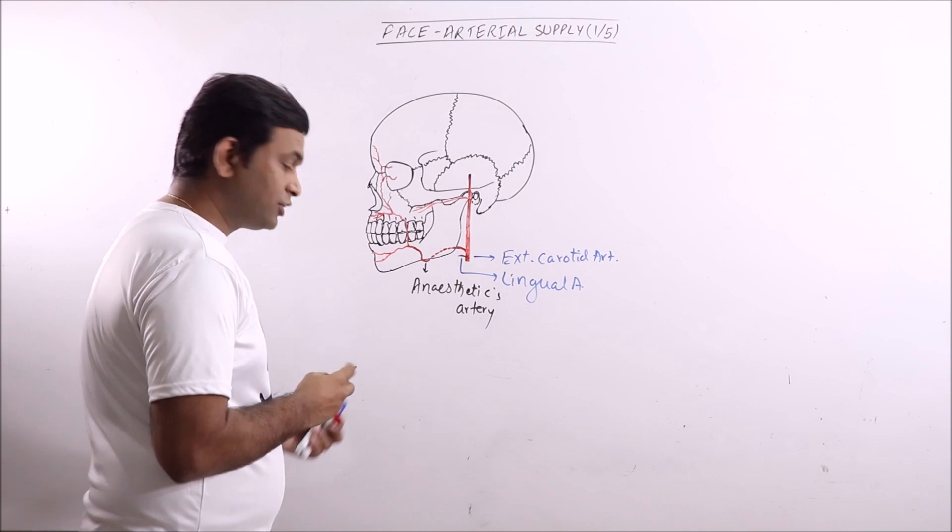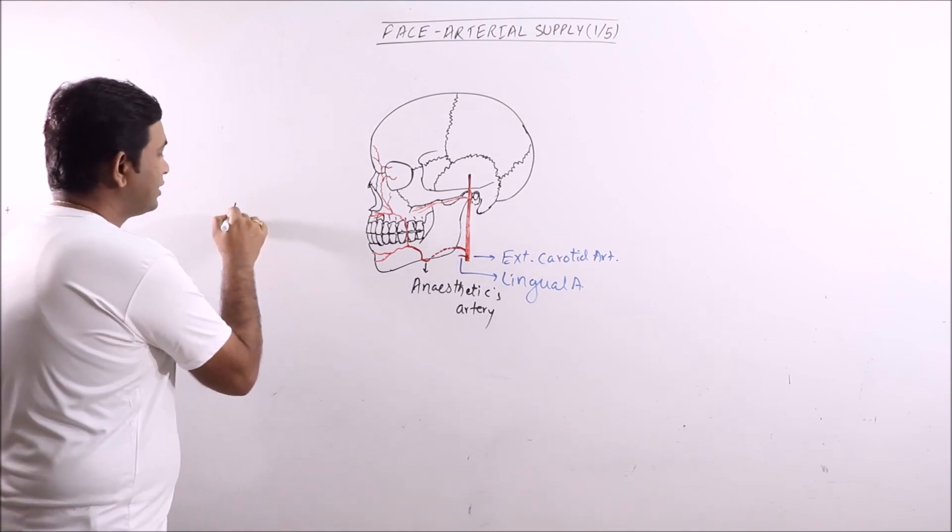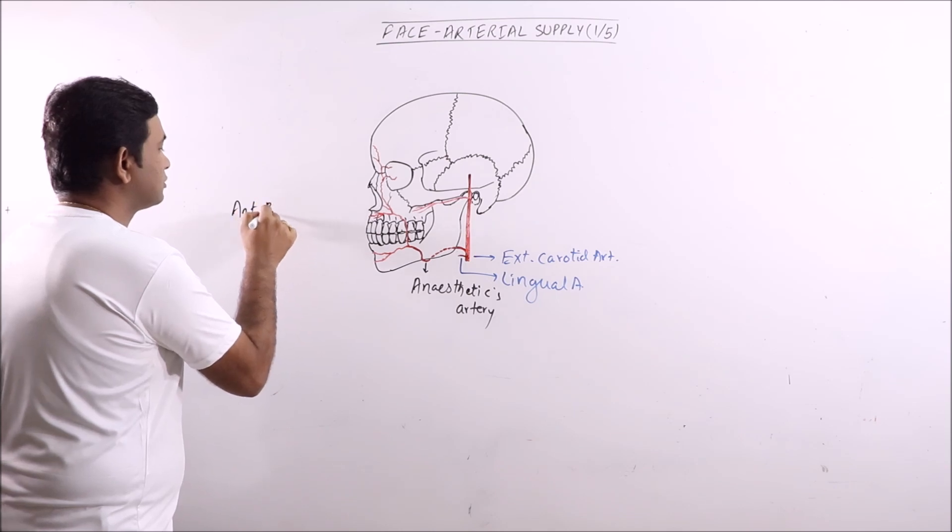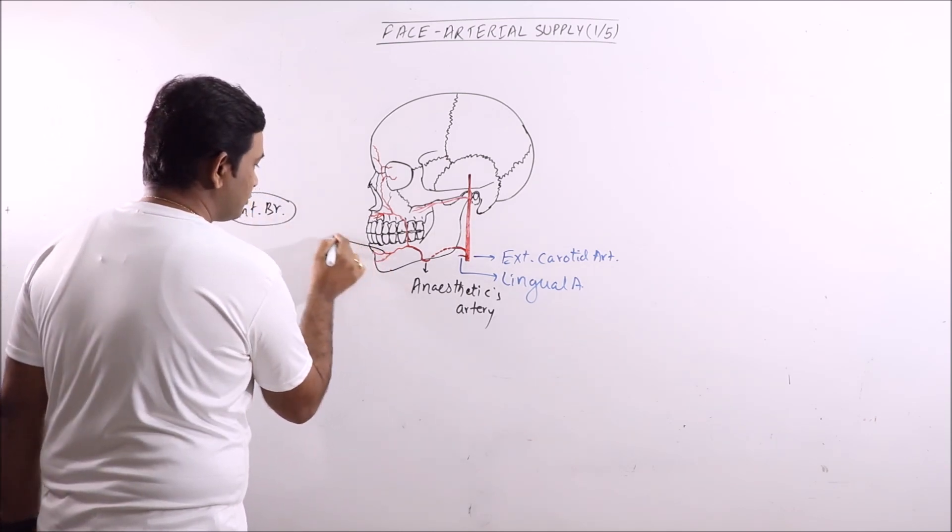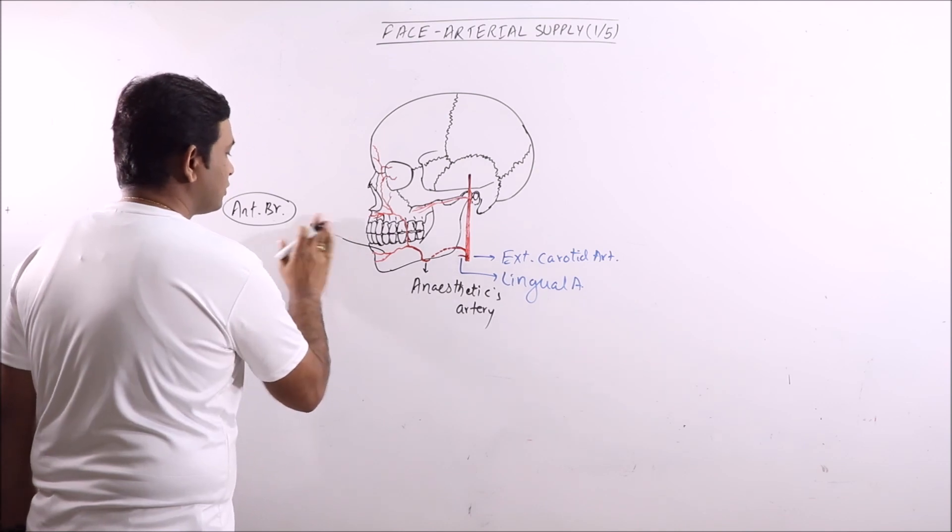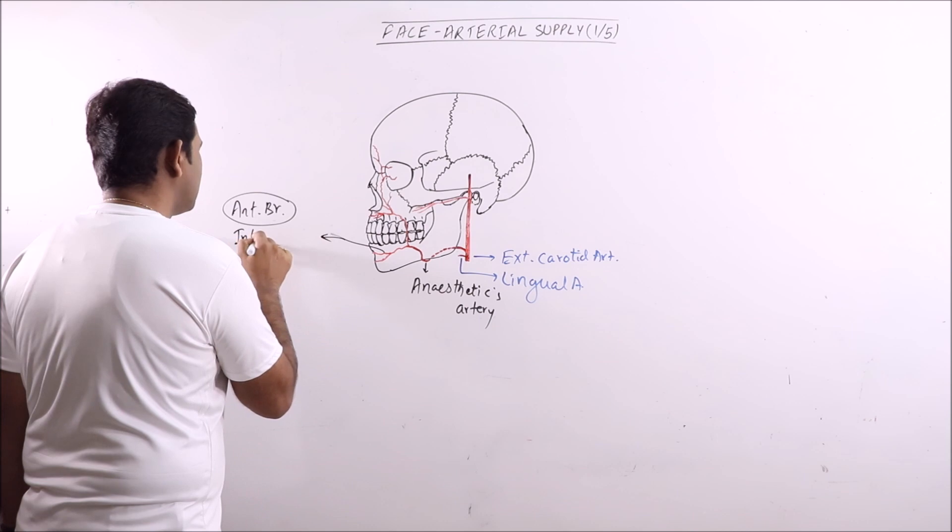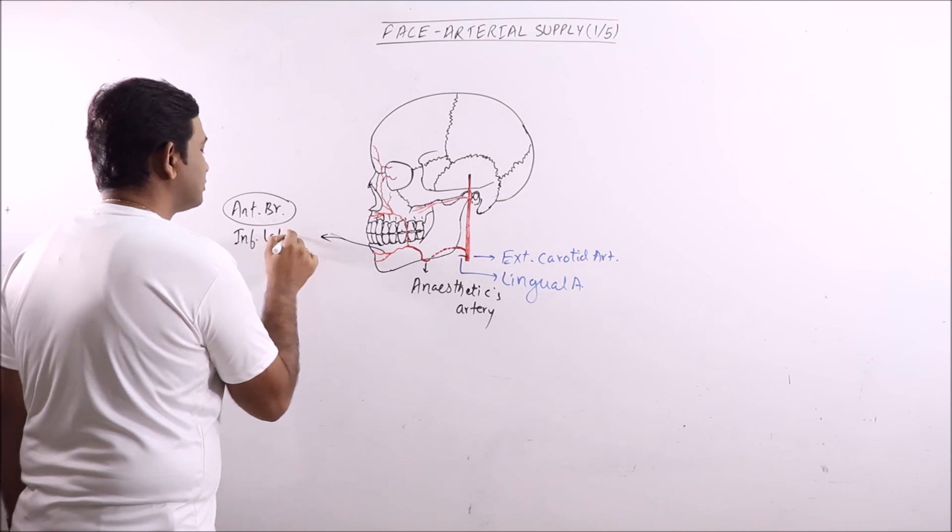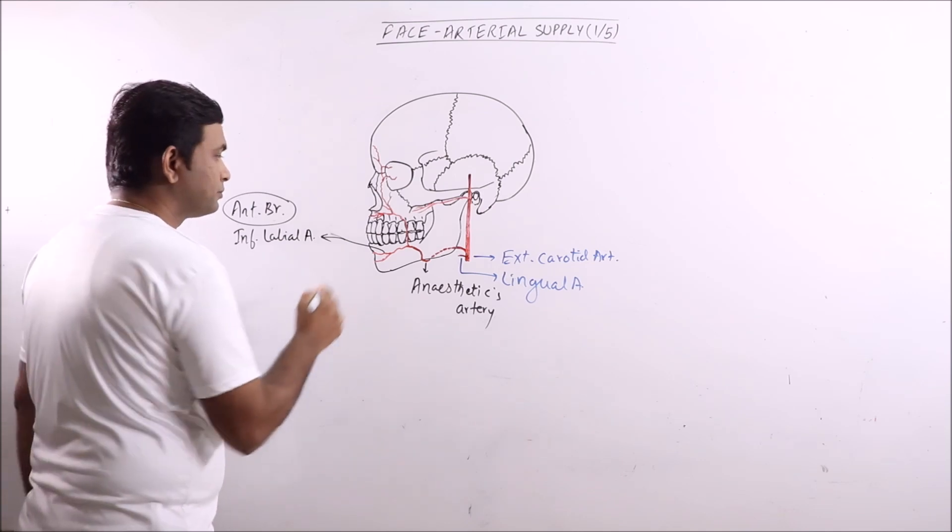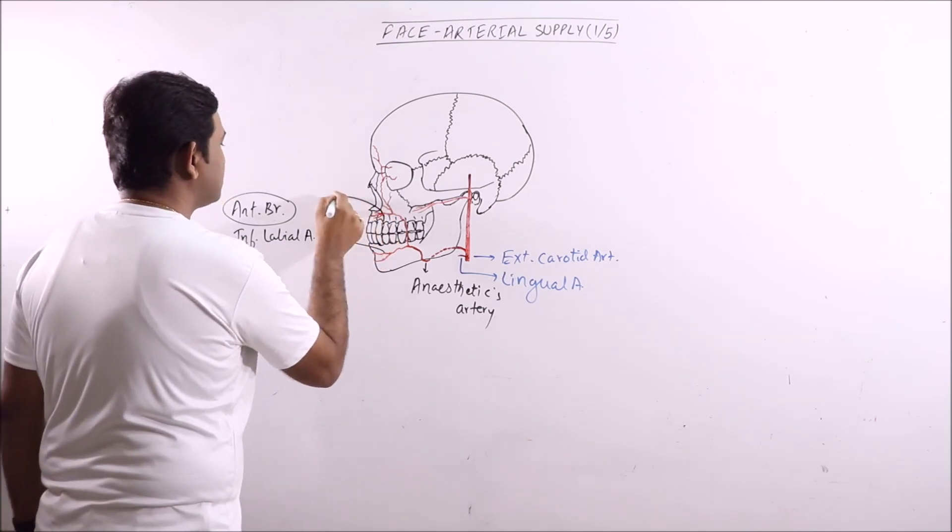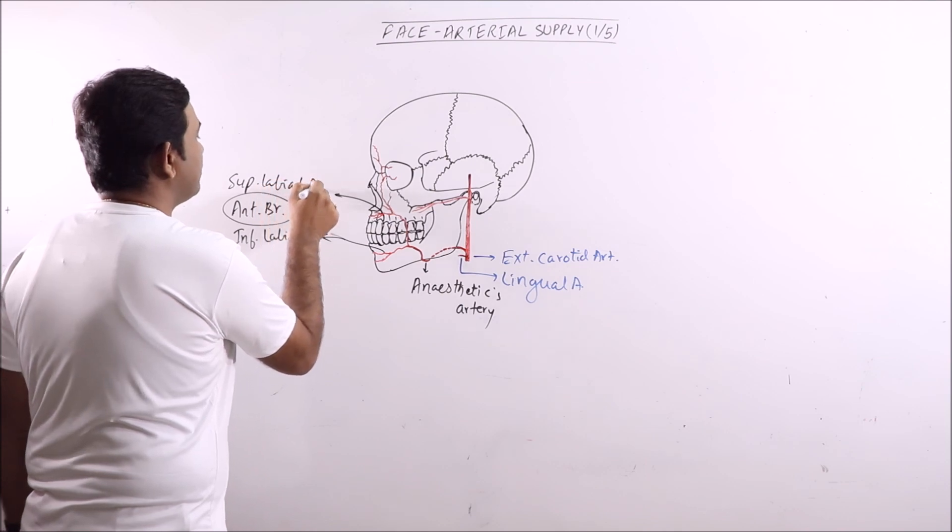The branches of facial artery are... There are anterior branches. Anterior branches include this one. This is inferior labial artery which supplies the lower lip. This is superior labial artery.